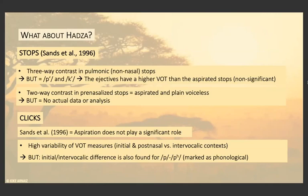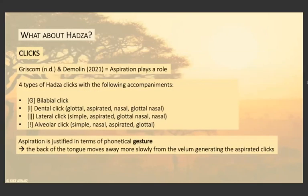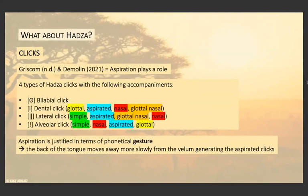As for the clicks, aspiration does not play a significant role according to earlier work, because there is high variability in VOT measurements. There are two groups — initial and post-nasal have very different results than intervocalic contexts. Recent studies have shown that aspiration might play a role in the click system, classifying the four types of Hatsa clicks with accompaniments: the bilabial only appears by itself; lateral and alveolar can appear by themselves or with other accompaniments; aspiration and nasalization appear in all of them; only dental and alveolar have glottalization, though it can appear with nasalization in dental and lateral. Aspiration is justified in terms of phonetic gesture — the back of the tongue moves away more slowly from the velum, generating the aspirated clicks.